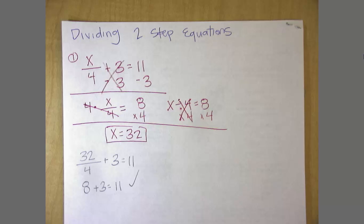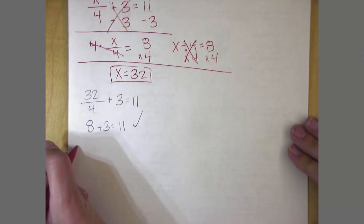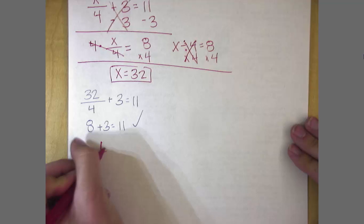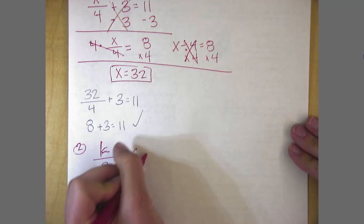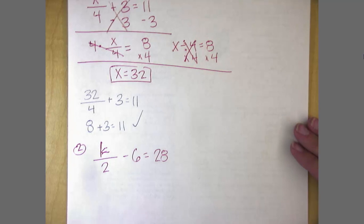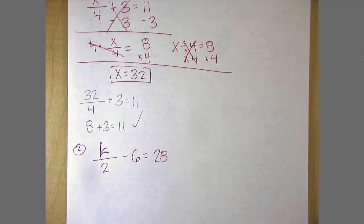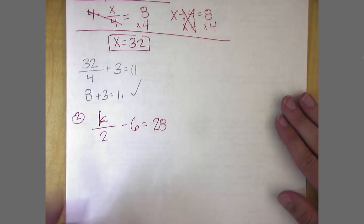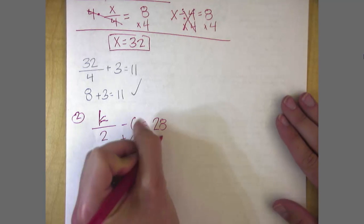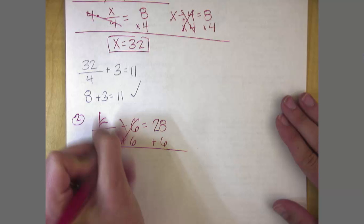Ready for another? Okay. k divided by 2, minus 6 is equal to 28. Let's do this one together, and then you can do the next one by yourself. To get rid of a minus 6. Yup. Need to add 6 to both sides. 6's cancel.